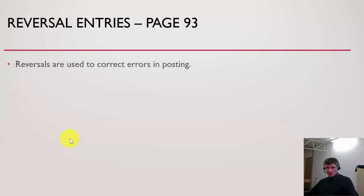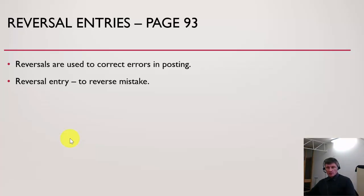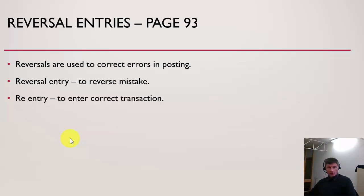Reversal entries are done to correct errors that the business has made in relation to posting into ledger accounts. In order to fix those, you must first reverse the mistake and then re-enter the correct transaction. Sometimes you can just make an adjusting entry — that's also valid — but generally this is the correct way of doing it, especially when talking about theory.